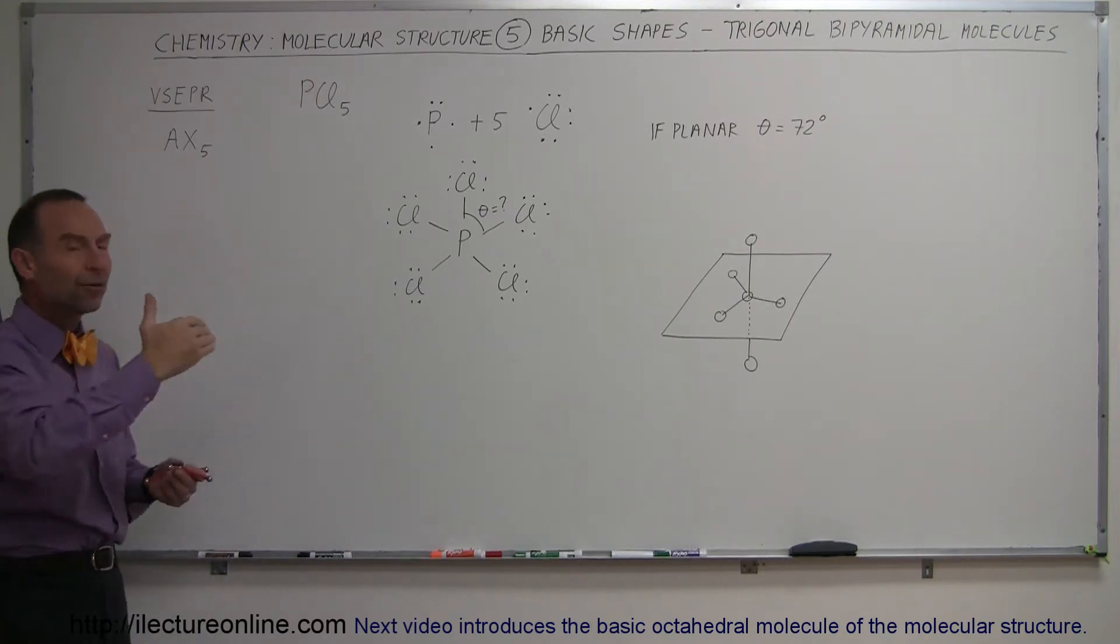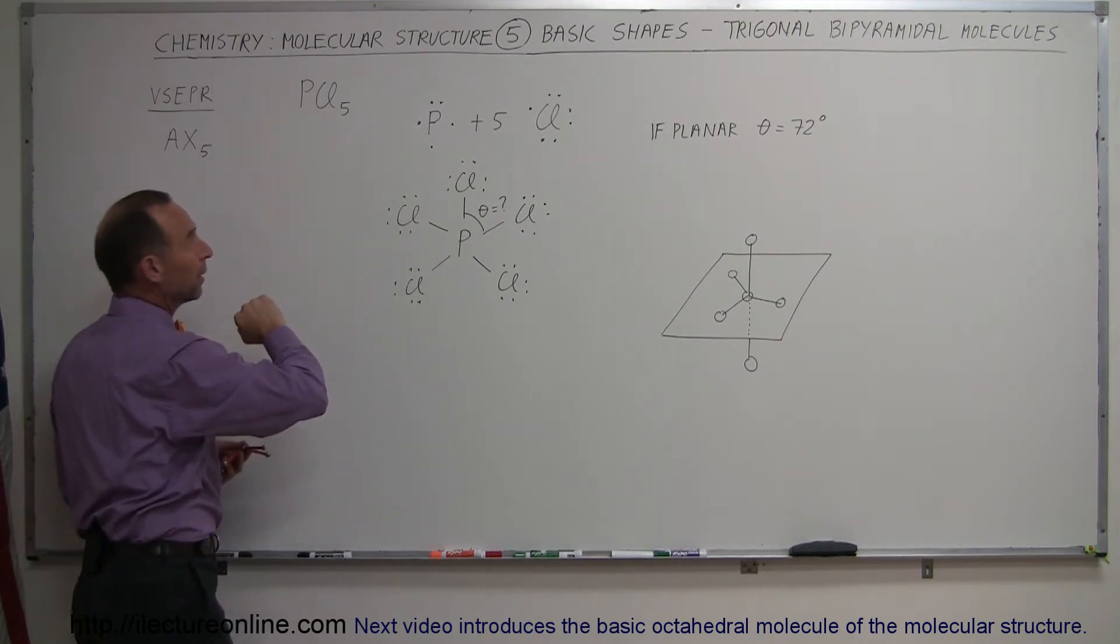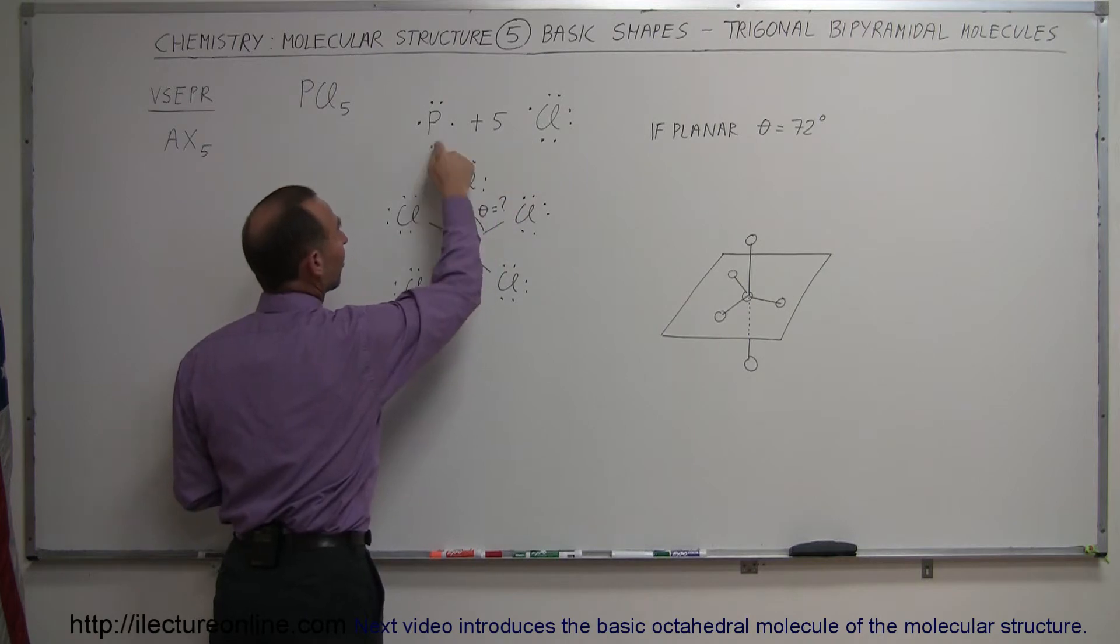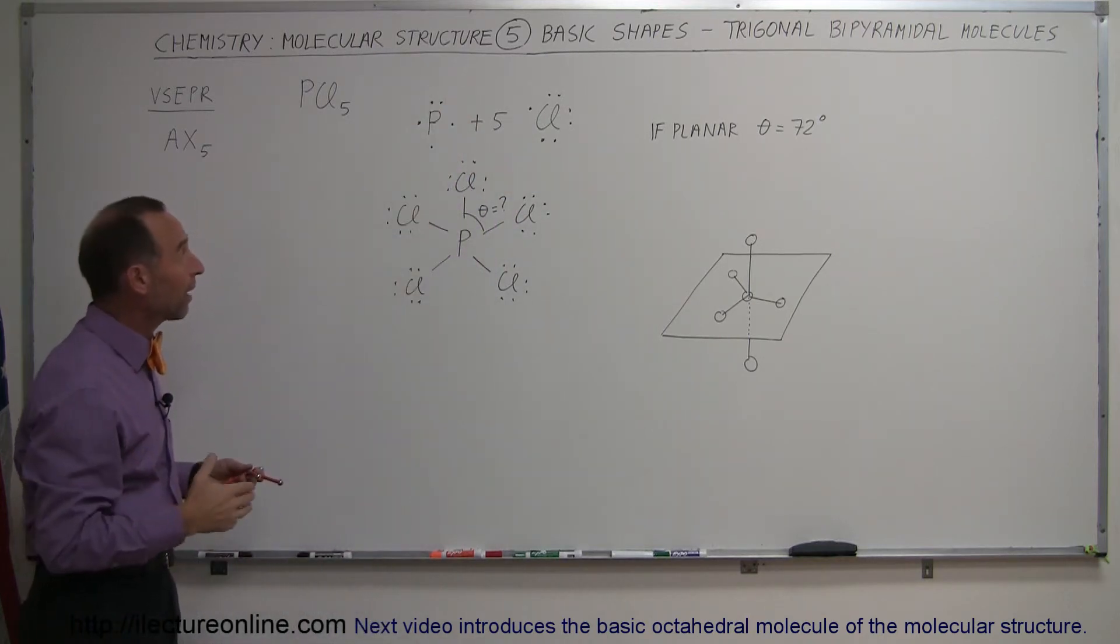Five terminal molecules at the end of five bonds. A good example of that would be phosphorus pentachloride. Notice we have one phosphorus atom, five chloride atoms. Phosphorus has five valence electrons, so it could make up to five bonds, five single bonds.